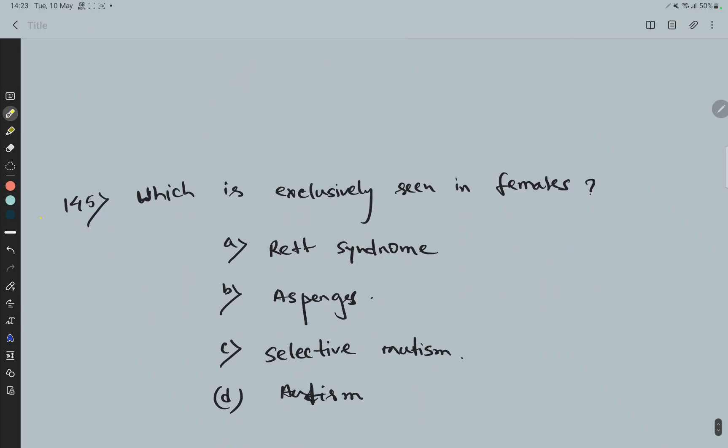Question 145: Which is exclusively seen in females. Options are: Rett syndrome, Asperger's, Selective mutism, and Autism. And here the right option is Rett syndrome.